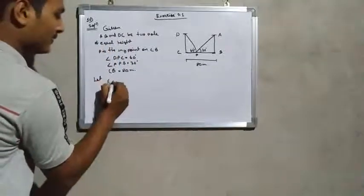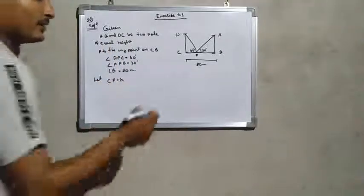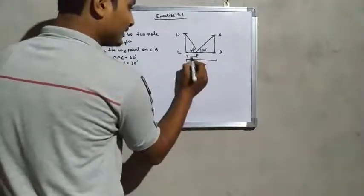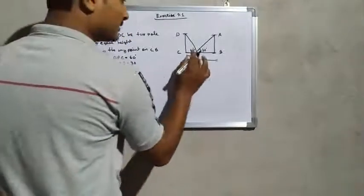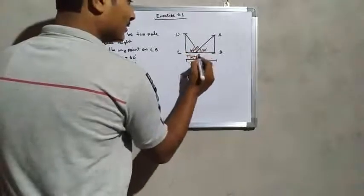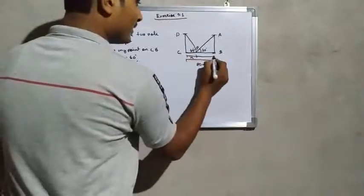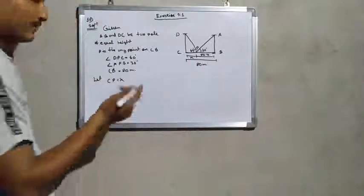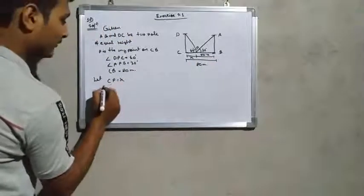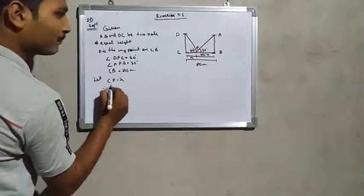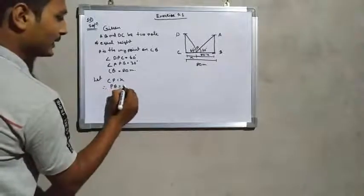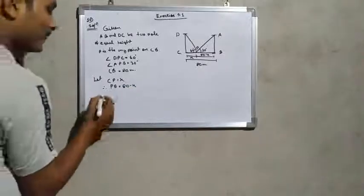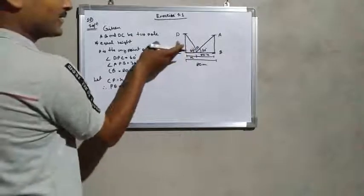C is any point on the road. Angle DPC is equal to 60 degrees and angle APB is equal to 30 degrees, and the distance CB is equal to 80 meters. Let CP equal x. If CP equals x, that means PB equals 80 minus x.